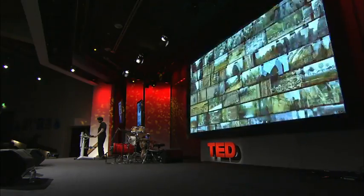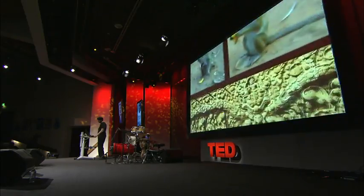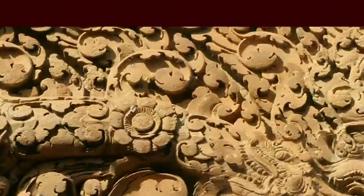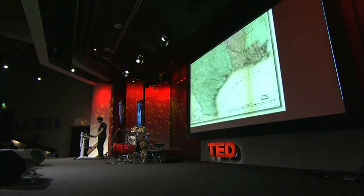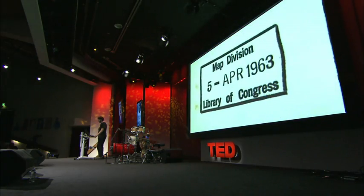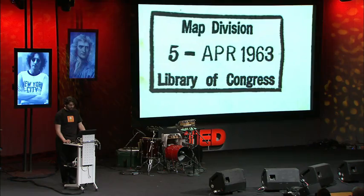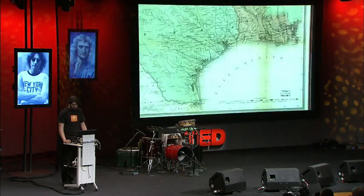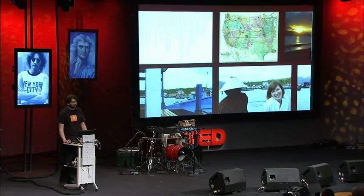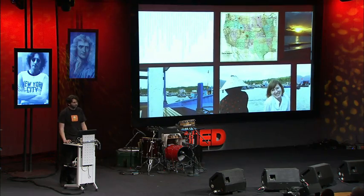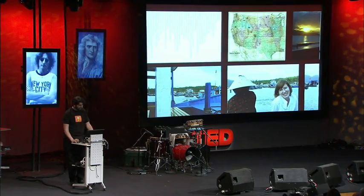It doesn't matter how much information we're looking at, how big these collections are, or how big the images are. Most of them are ordinary digital camera photos, but this one, for example, is a scan from the Library of Congress, and it's in the 300-megapixel range. It doesn't make any difference, because the only thing that ought to limit the performance of a system like this is the number of pixels on your screen at any given moment.